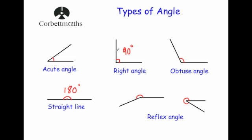Next we've got a right angle. A right angle is a 90 degree angle. It's shown here with a little box — two straight lines. So anytime you see that symbol, it's a 90 degree angle.